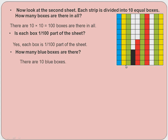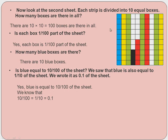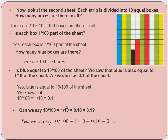How many blue boxes are there? Count — there are 10 blue boxes. Blue equals 10/100 of the sheet. We also said blue equals 1/10 of the sheet, written as 0.1. So 10/100 — cancel the zeros — becomes 1/10, which equals 0.1. So 10/100 = 1/10 = 0.10 = 0.1. After the decimal point, trailing zeros don't change the value.